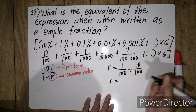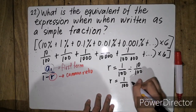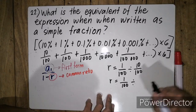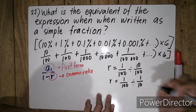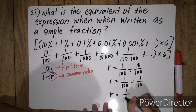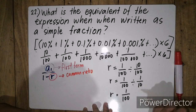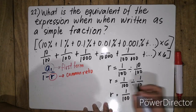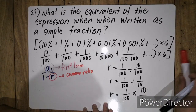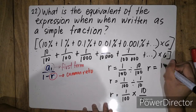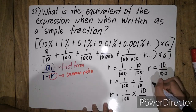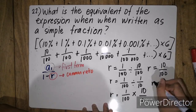R is equal to 1 over 100 divided by 10 over 100, which can be simplified. So r is equal to 1 over 100 times the reciprocal of 10 over 100, which is 10 over 1 — that's simply r is equal to 10 over 100, or r is equal to 1 over 10.